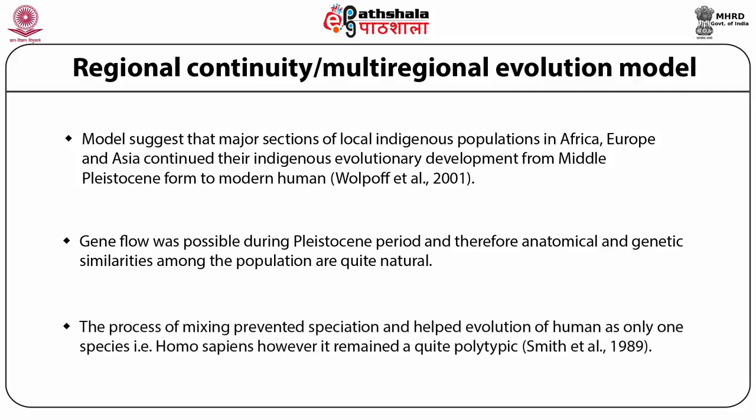The hypothesis further argues that because of natural selection and gene flow, the evolution of several population groups in a particular region was not totally independent. The process of mixing prevented speciation and helped the evolution of humans as only one species, Homo sapiens, though it remained quite polytypic. The model classifies all hominids following Homo erectus as a single species Homo sapiens, and also accepts the influence of African human immigrants throughout the world.